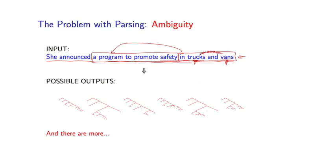For example, I could coordinate trucks and vans, which is correct, but I could coordinate vans and safety, which gives you another interpretation. This preposition could be modifying safety or it could be modifying program. Actually, it could also be modifying promote or even announced. You're going to get many different interpretations under these different places that this prepositional phrase can modify the preceding words.